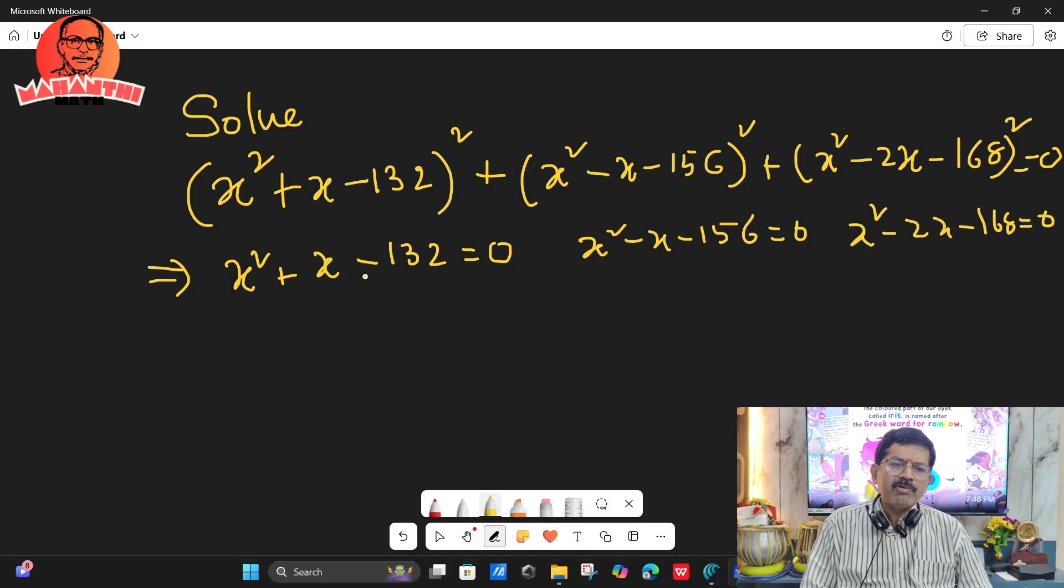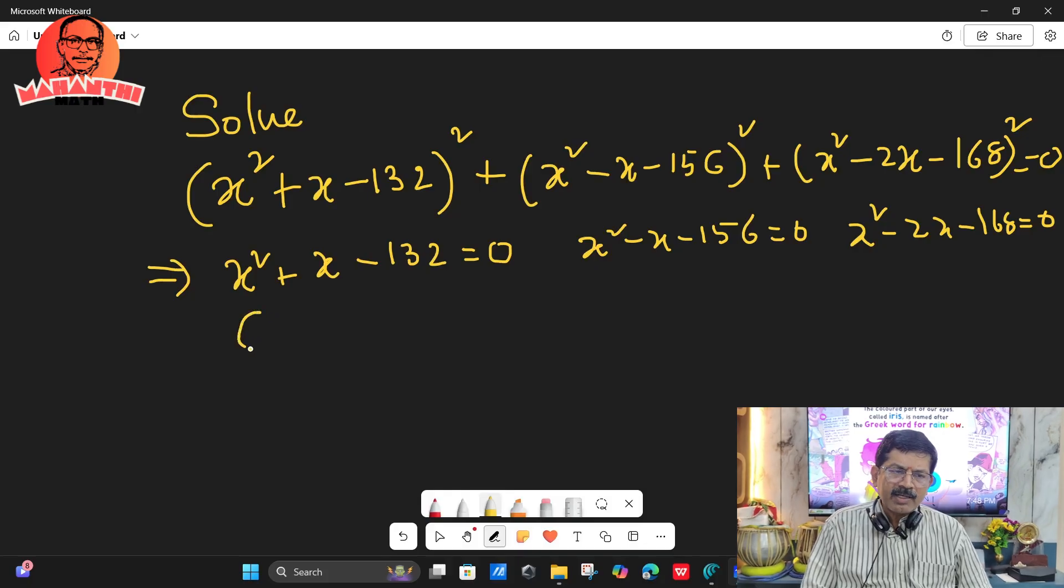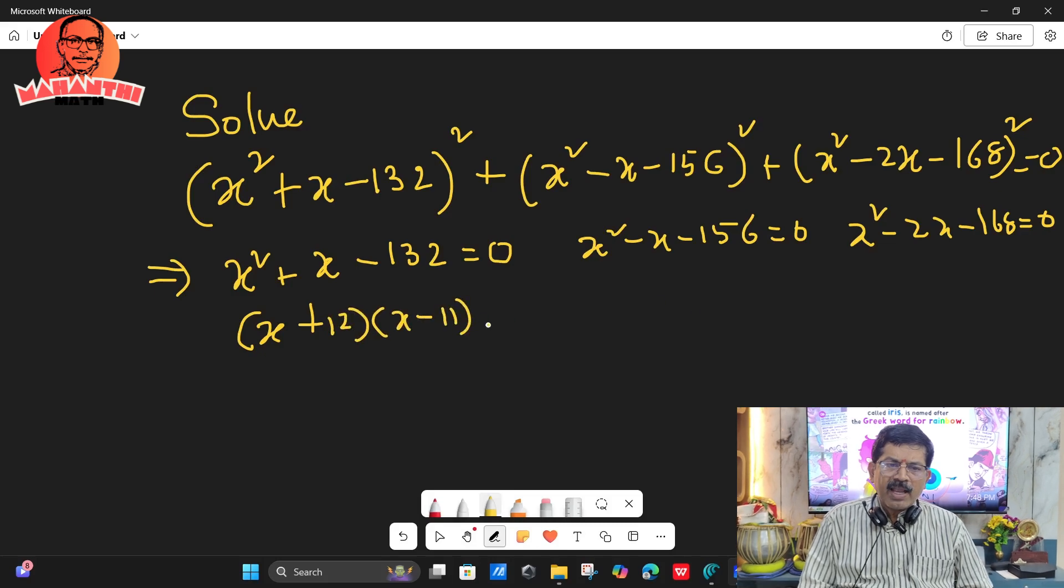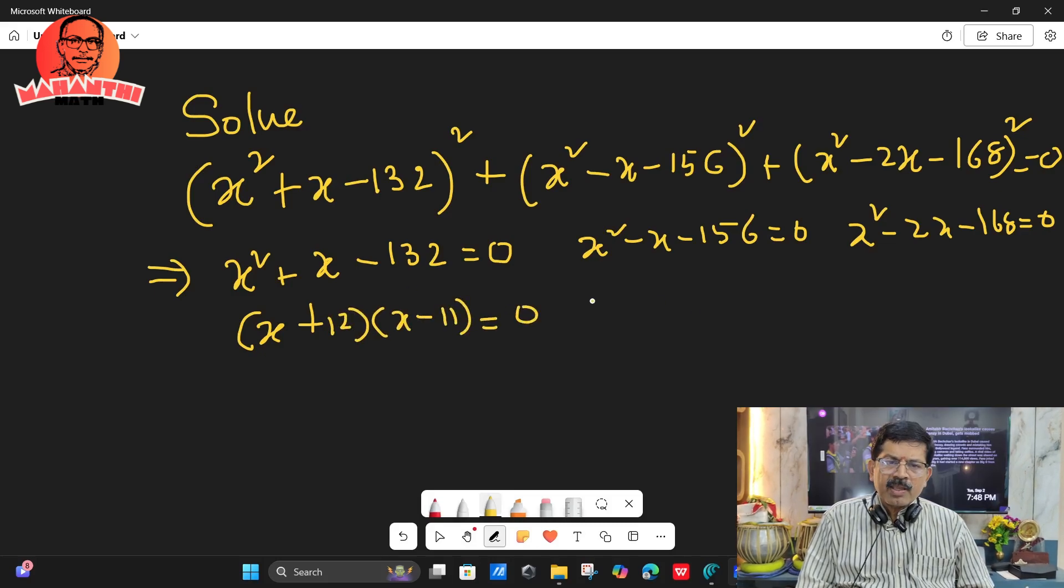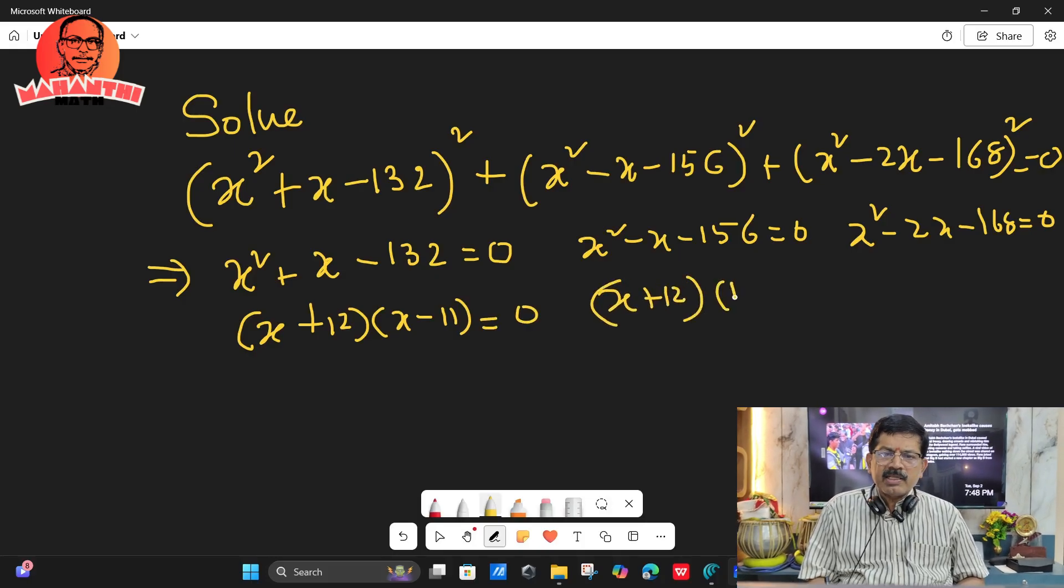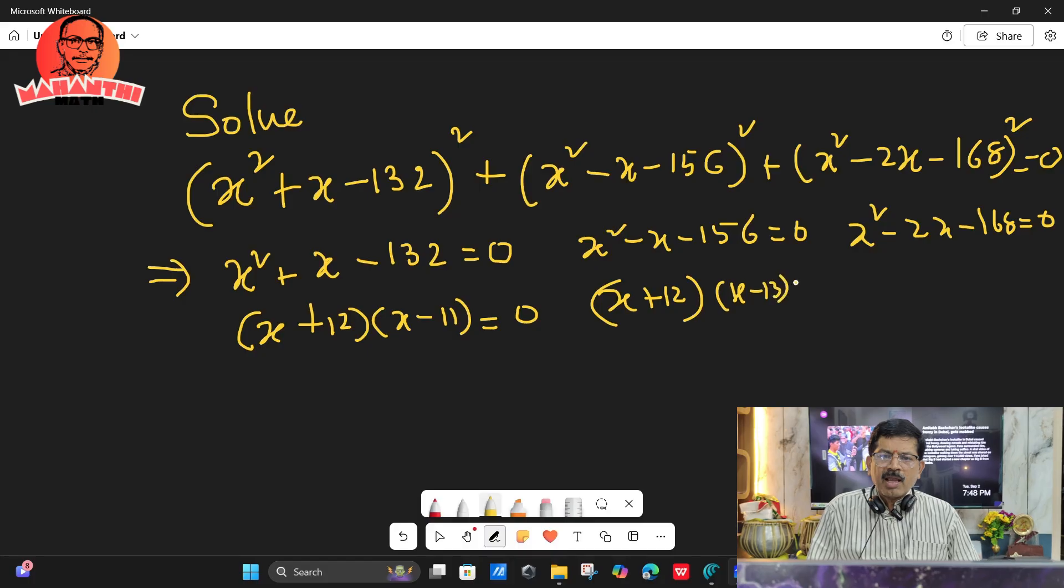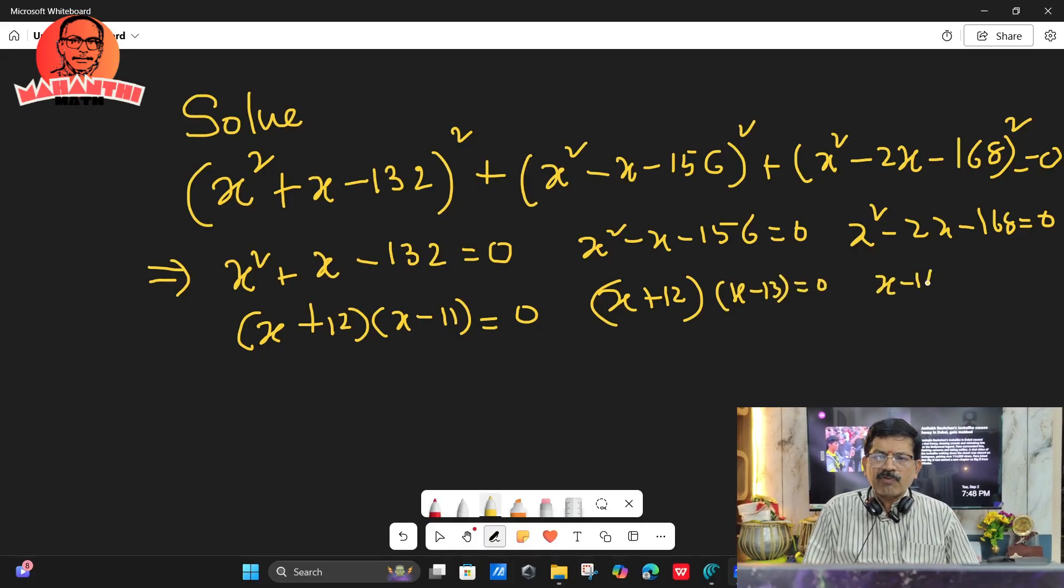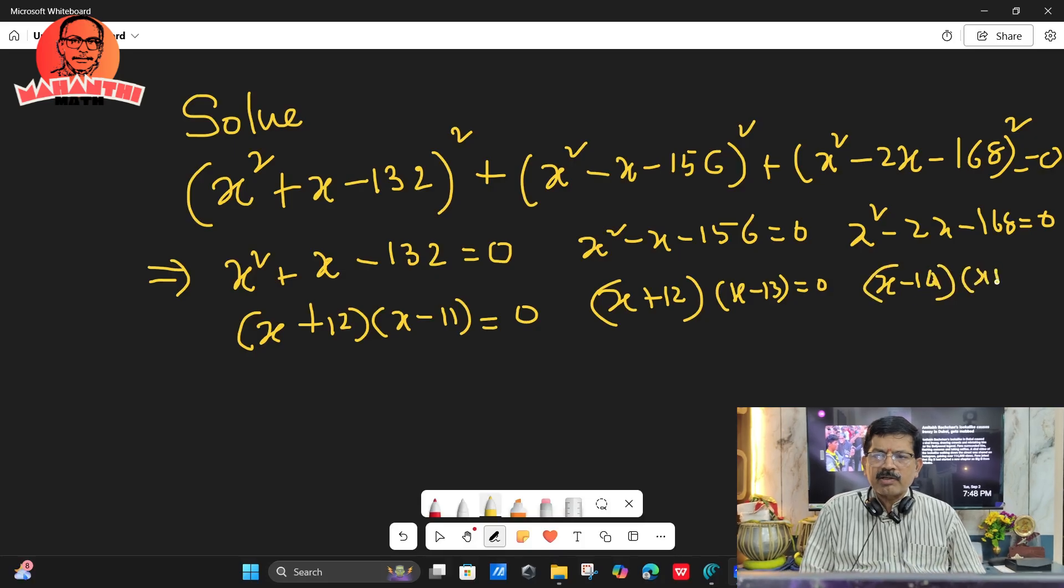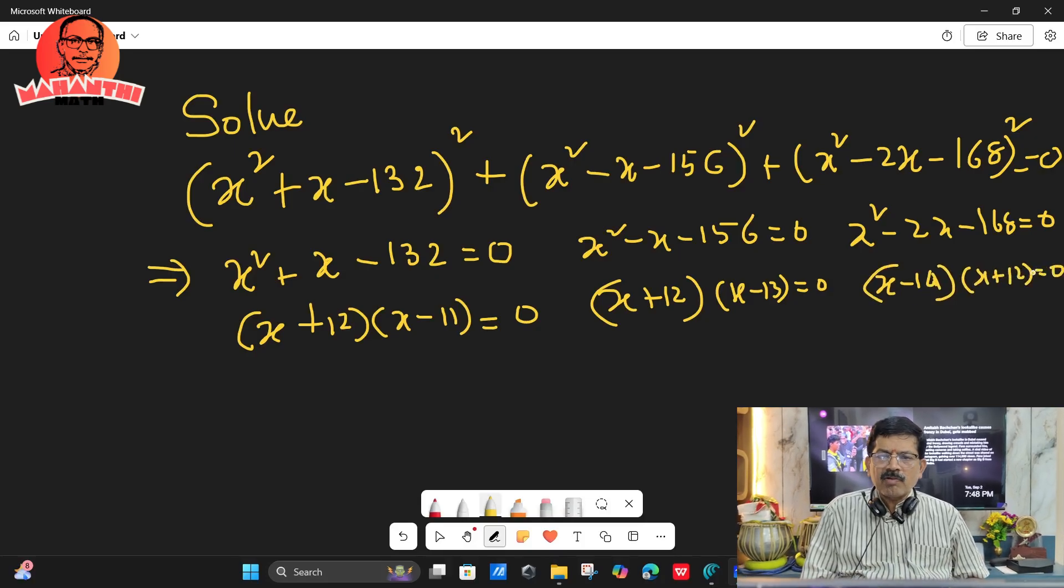Now you can solve by using splitting middle term. The factors of first one is (x + 12)(x - 11) = 0. The factors of second one is (x + 12)(x - 13) = 0. The factors of third one is (x - 14)(x + 12) = 0.